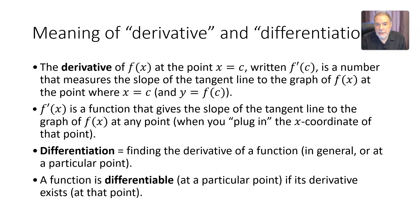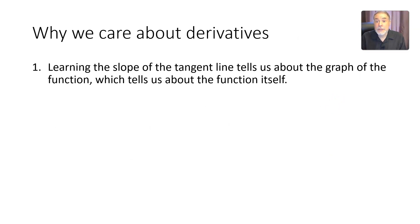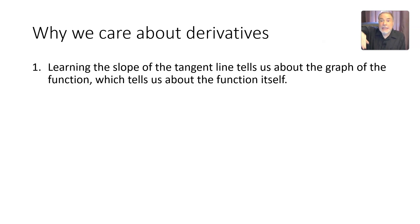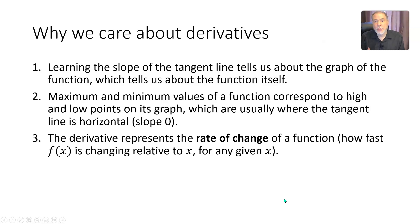Why do we care about derivatives? One reason is that they give us the slope of the tangent line, which tells us about the graph of a function — where it's going up and where it's going down, and how steep it is. Sometimes we're interested in where the function has a maximum or minimum value, and those are usually where the tangent line is horizontal — where the slope of the tangent line is zero. The derivative also represents the rate of change of a function.